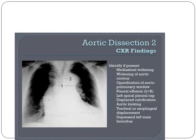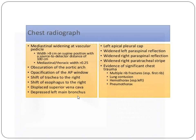On chest X-ray in aortic dissection, important findings include mediastinal widening, widening of the aortic contour, opacification of the aortopulmonary window, pleural effusion more on the left side than the right, aortic kinking, and tracheal and esophageal displacement to the right. There may also be a pleural cap and depressed left main bronchus. Mediastinal widening at the vascular pedicle measuring more than 8 cm on supine position with a source-to-detector distance of 100 cm.